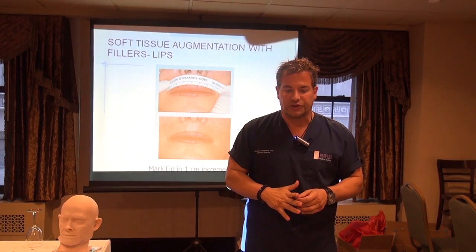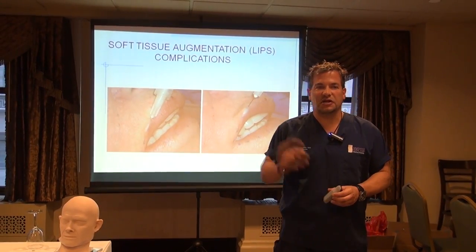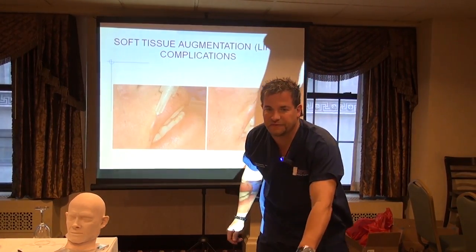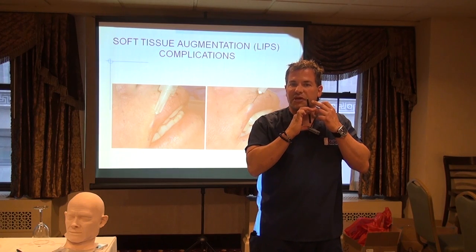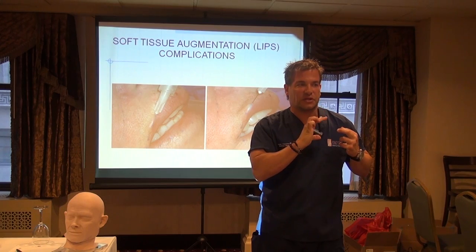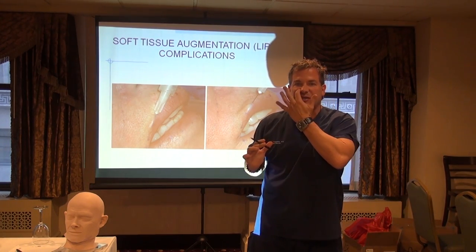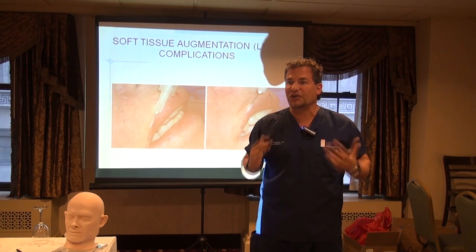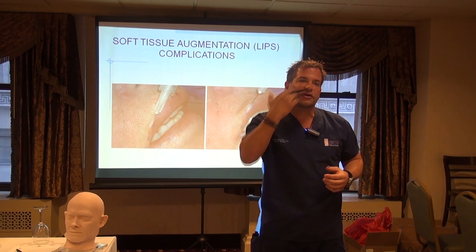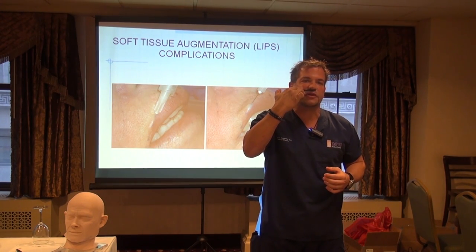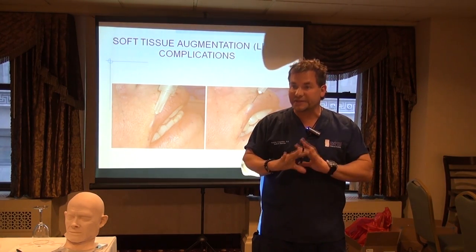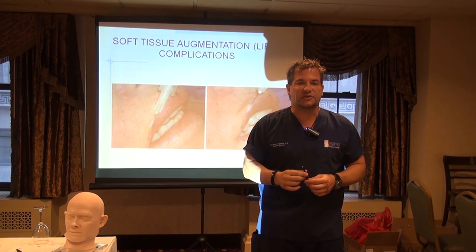This is a specific technique for injecting the lips — some people call it the push-through technique. With fillers, typically you advance your needle and lay down a thread of product as you pull out. That's the standard approach in the nasolabial fold area — called linear threading — and you can do the same in the lips. Advance along the vermilion border with a 30-gauge half-inch needle, depress the plunger, and lay the product down as you come out.